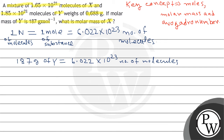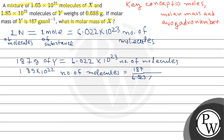इस तरीके से जो हमारा यहाँ पर दिया गया है, 1.85×10²¹ number of molecules का मतलब होगा mass of Y equals 187 divided by 6.023×10²³ into 1.85×10²¹, this equals 0.574 gram of Y.